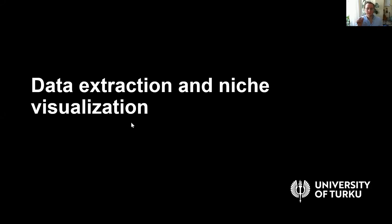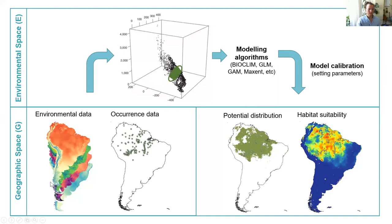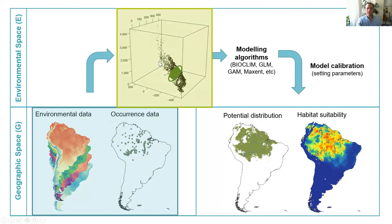We're going to extract information from the places where the species has been recorded. We already saw environmental data and occurrence data, and the part we're going to tackle in this practical demo is to visualize this. From this data, you're going to extract this information and make a plot where you can see all the environmental conditions of the study area and also the environmental conditions where the species is. This is the second part of today's practical.